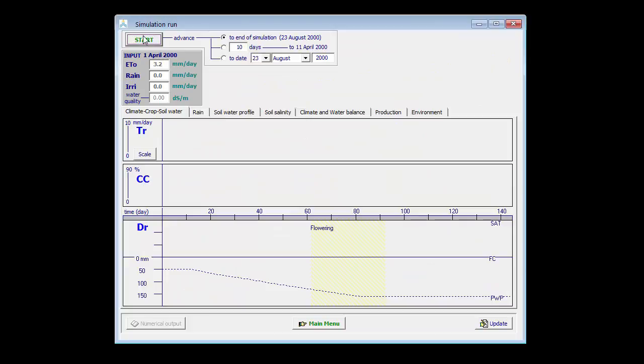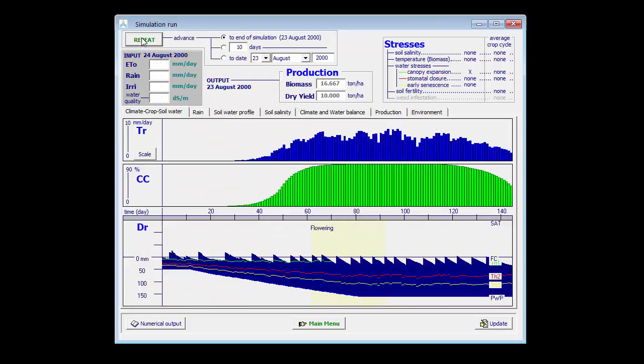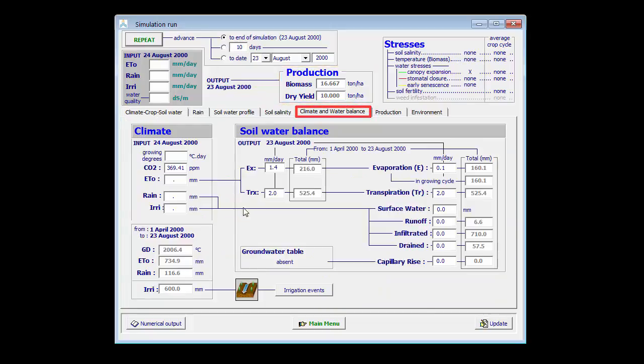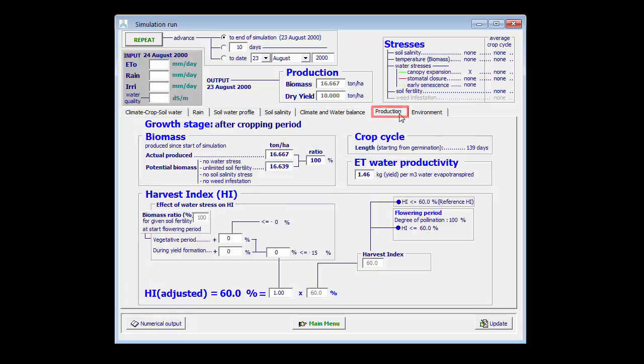I run it again and now indeed I can see that I get the same yield of 10 tons by applying 600 mm, which corresponds with 20 irrigation events.